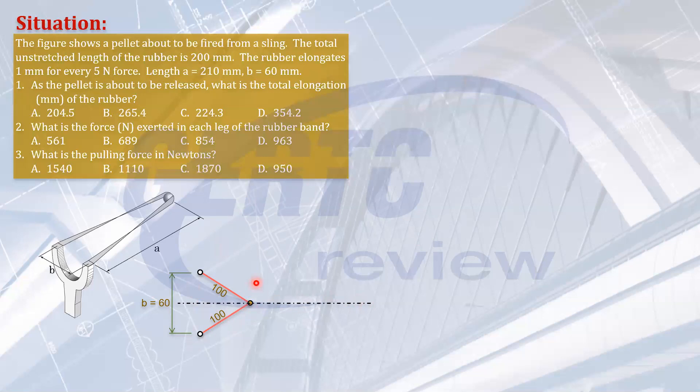This was slowly stretched going to the right, increasing the length of the rubber like this. Stretch it again and stretch it further. So we have here the pulling force. That's the main question, the pulling force. It was pulled to a distance of, it says here that A is 210 mm. This is the 210 mm.